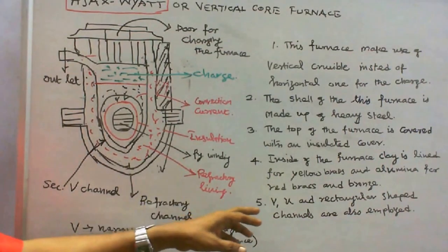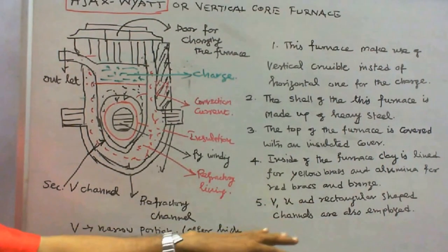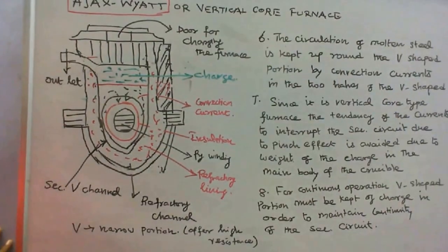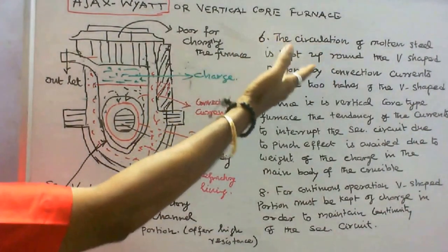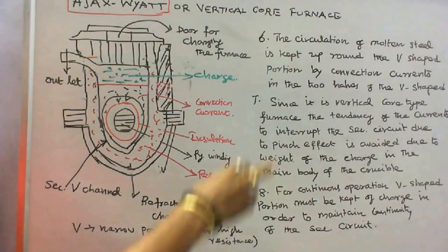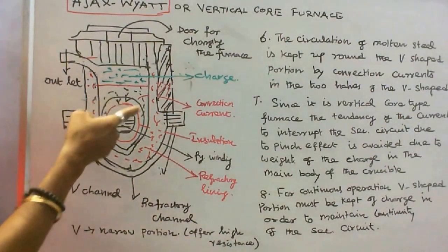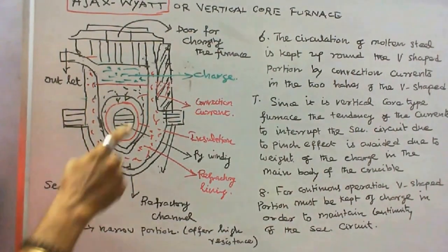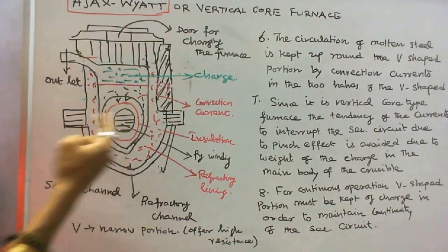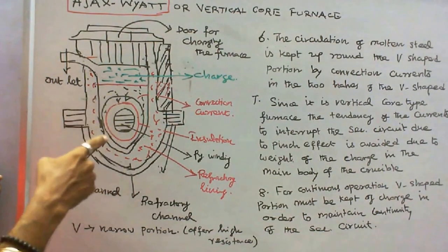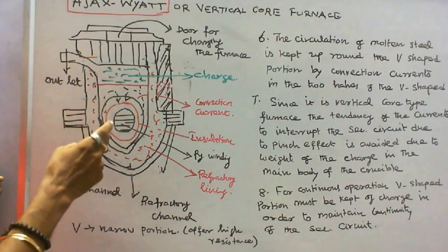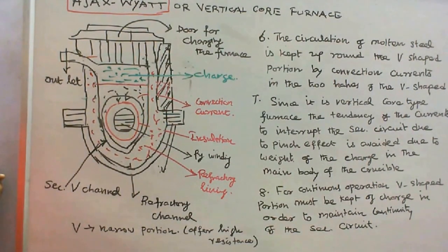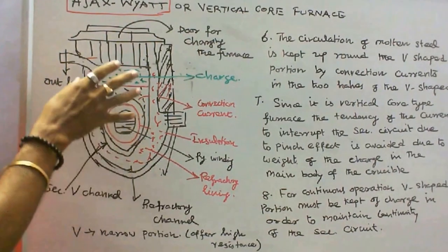Apart from V-shaped channels, U and reticulatory shaped channels are also employed in this furnace. The circulation of molten metal is kept up around the V-shaped portion by convection currents. In the two halves of the V-shape, since it is a vertical core type furnace, the tendency of the current to interrupt the secondary circuit due to the pinch effect is avoided due to the weight of the charge in the main body of the crucible.